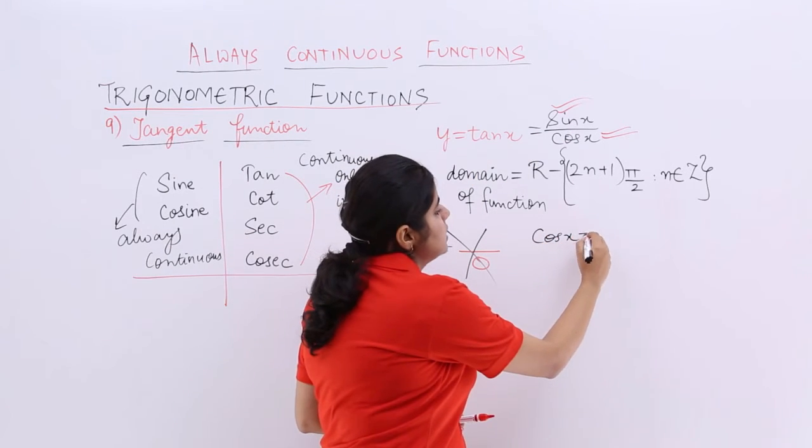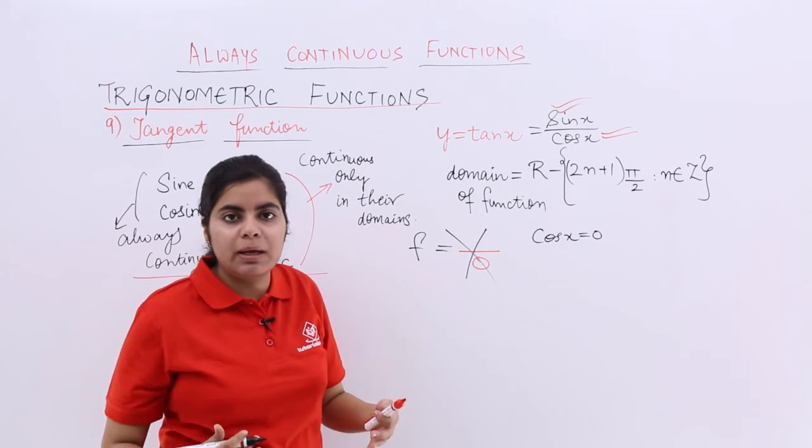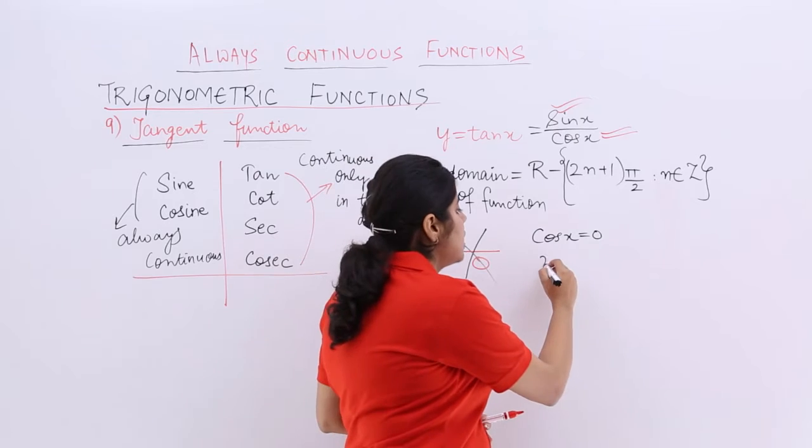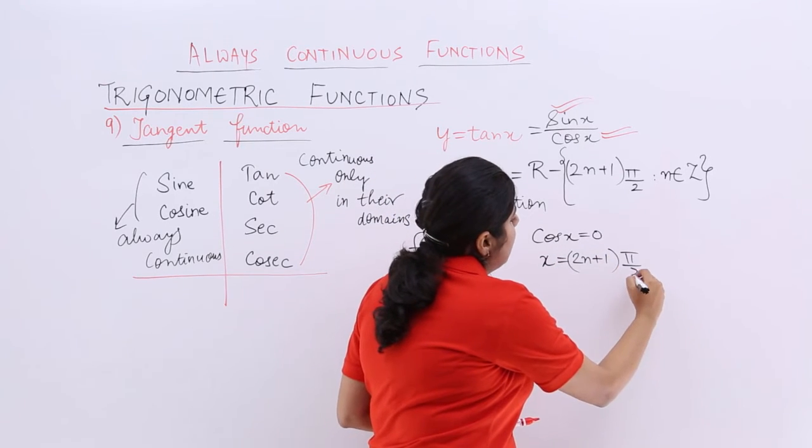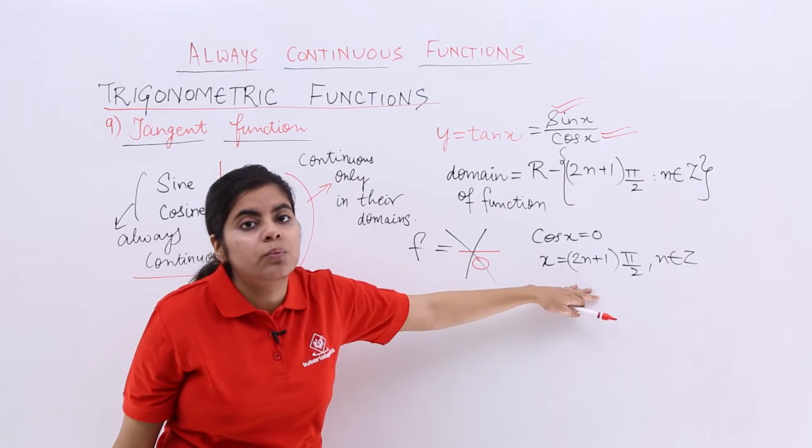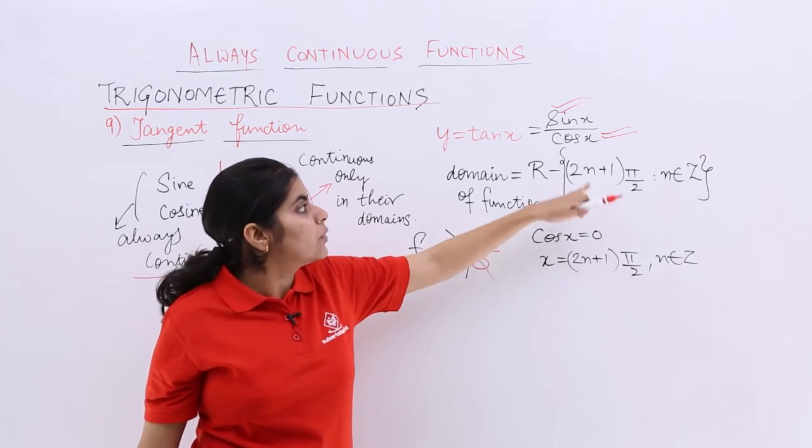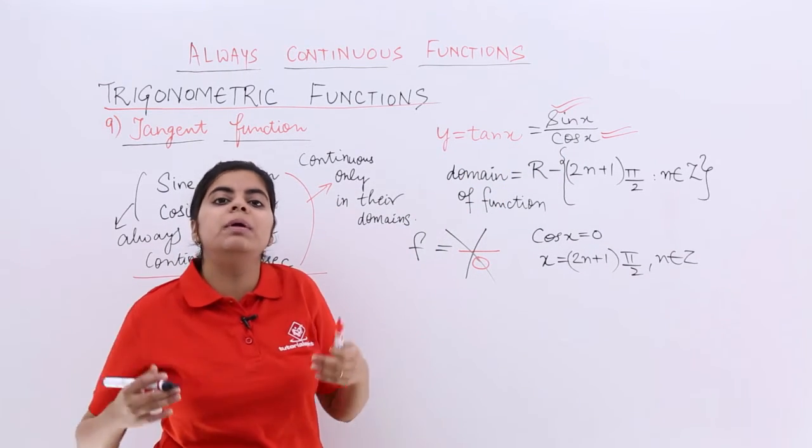Cos x is 0 for π/2. And cos x is 0 for 3π/2 and so on. That means, whenever x is (2n+1) times π/2, n belonging to integers, my cos is 0. And if cos is 0, the denominator here is 0, my tan is not defined. So, how will it be continuous?